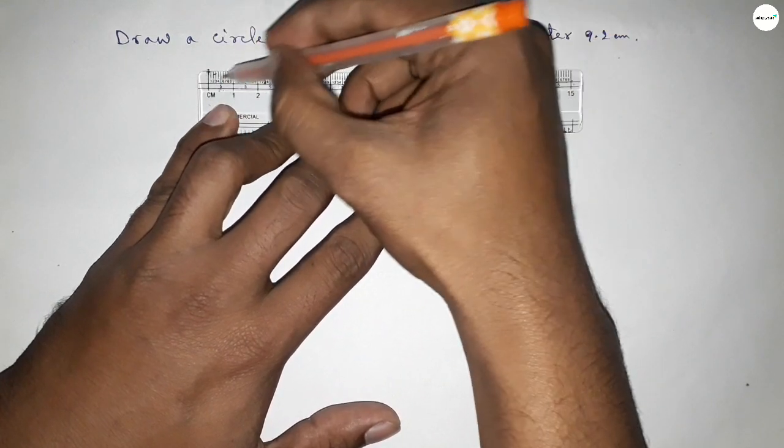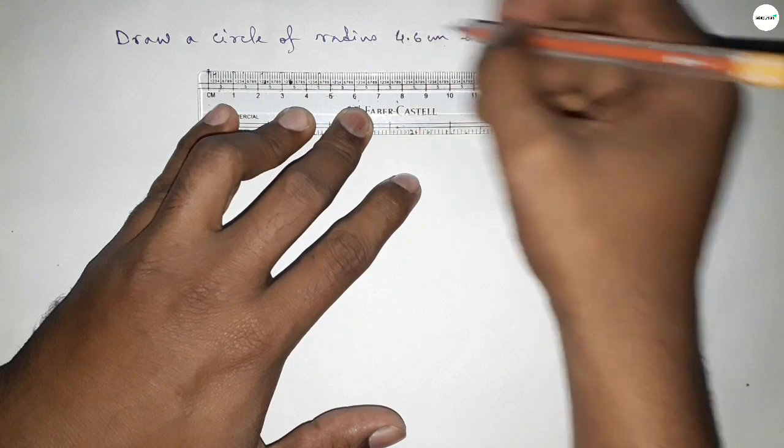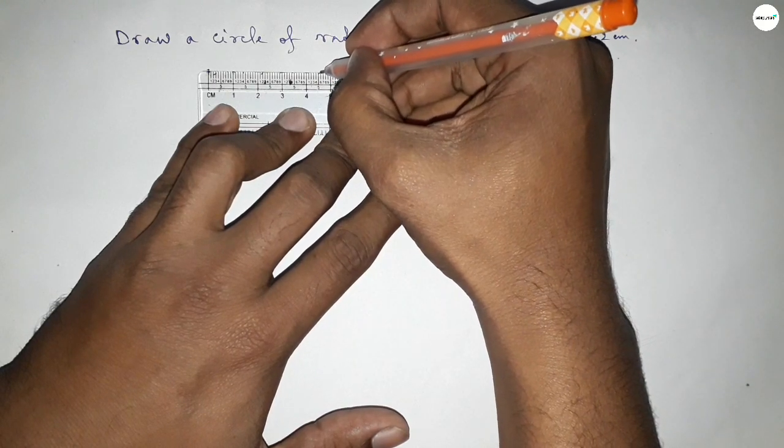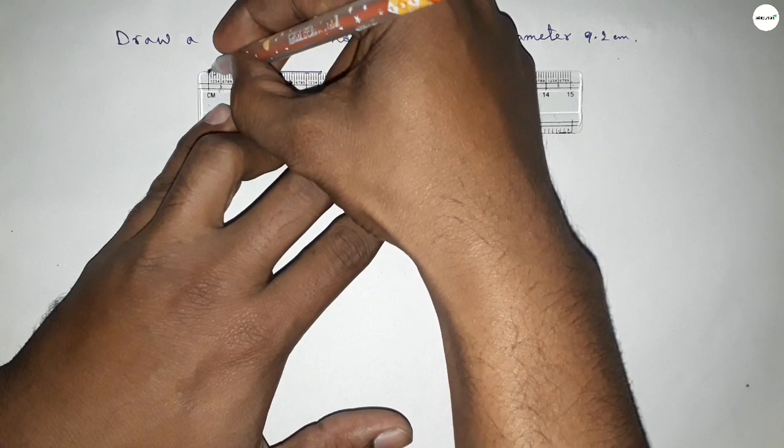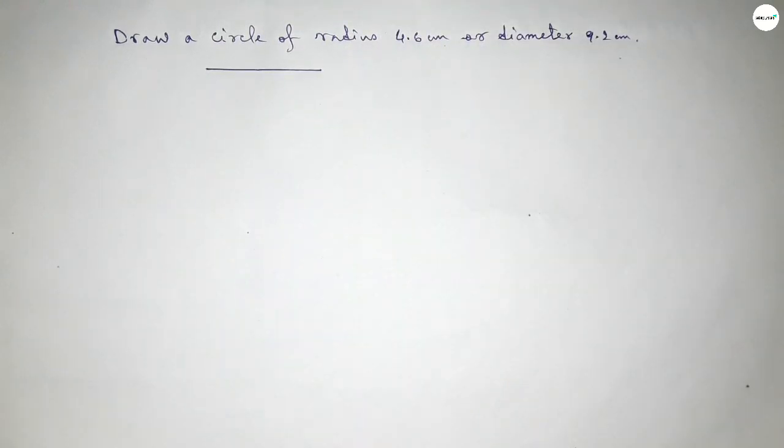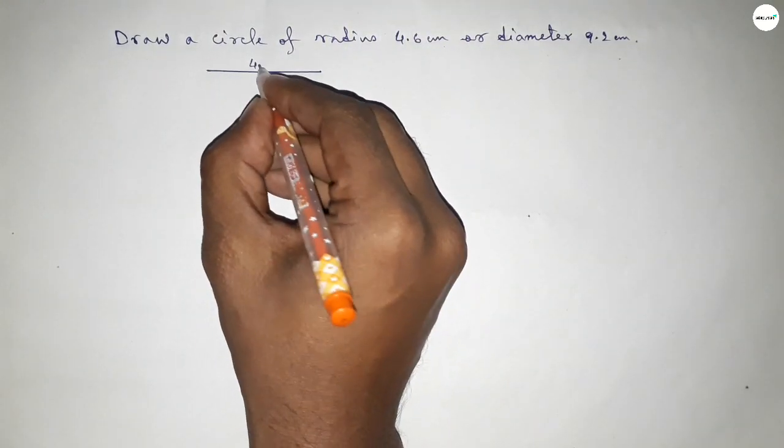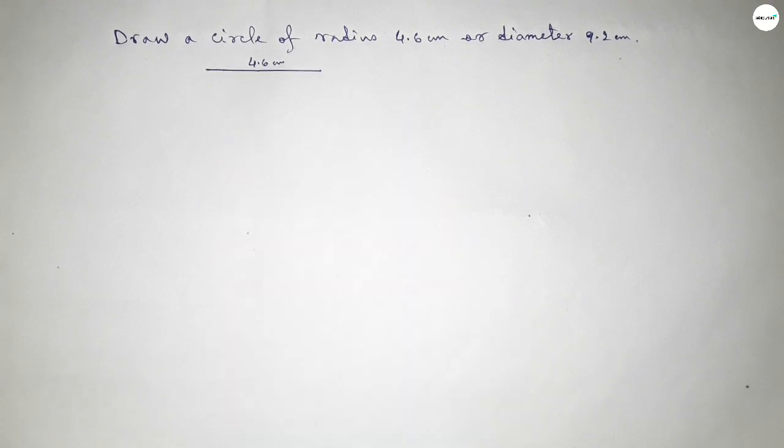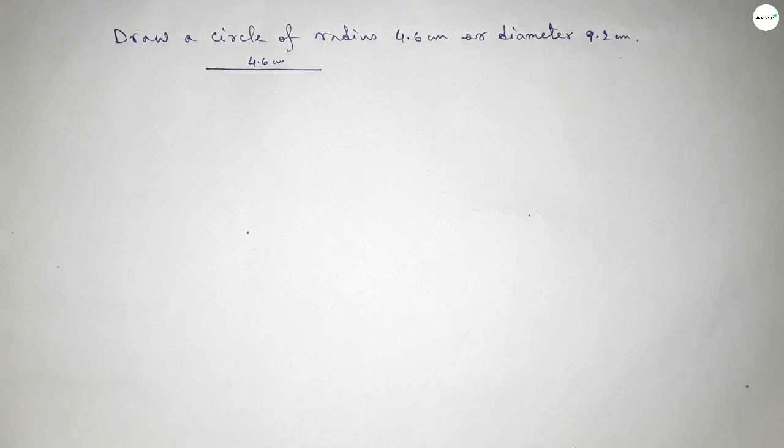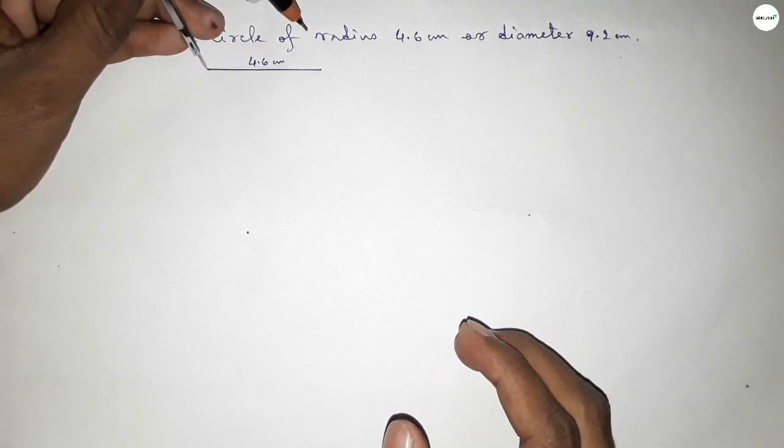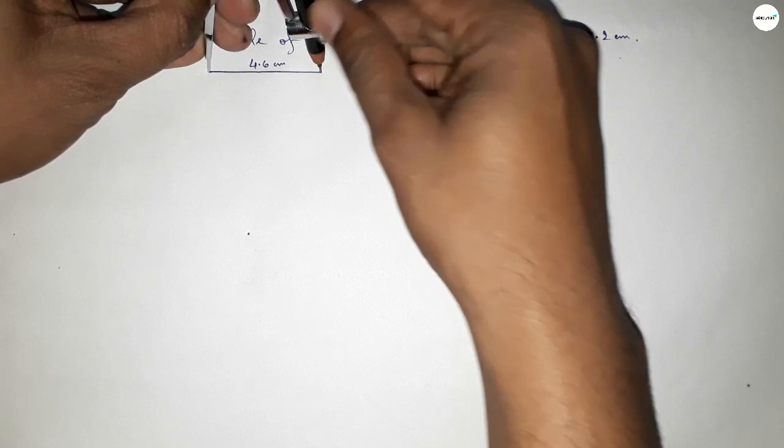Because the radius of a circle is half of diameter, so this is 4.6 centimeter. So first drawing here the radius 4.6. So this is 4.6 centimeter. Now taking here a point.